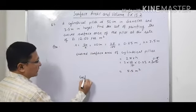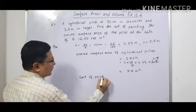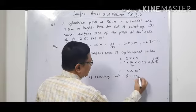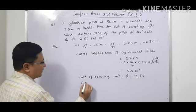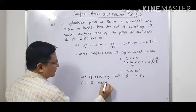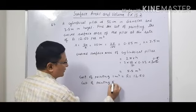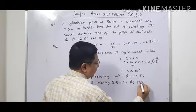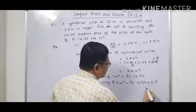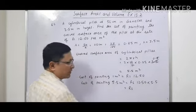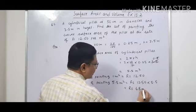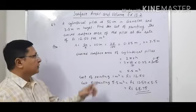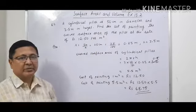Now we have to find the cost of painting. The cost of painting 1 meter square is rupees 12.50. So we have to find the cost of painting the curved surface area that we have got, that is 5.5 meter square. So that will be equal to rupees 12.50 into 5.5. When we multiply this, we will get the answer that is equal to 68.75. So rupees 68.75 are required to paint the pillar, which has diameter 50 centimeter and height 3.5 meter.